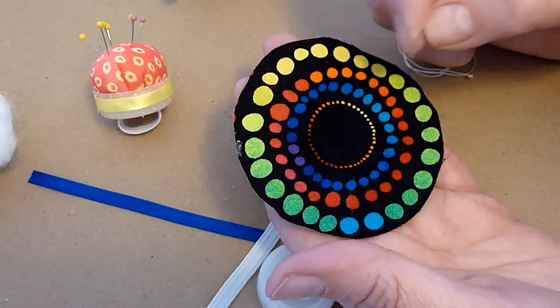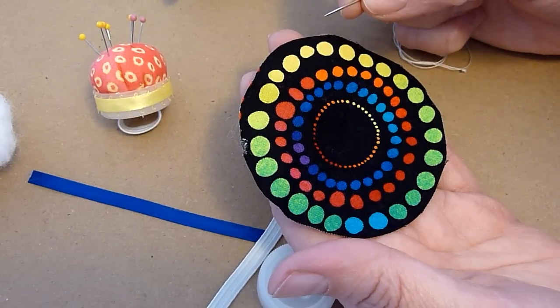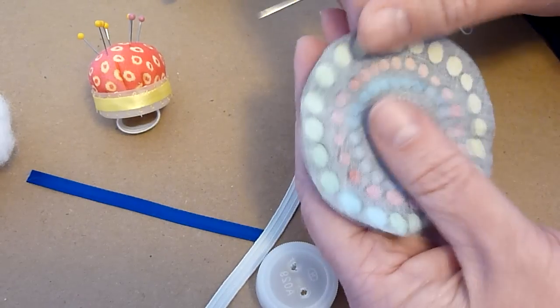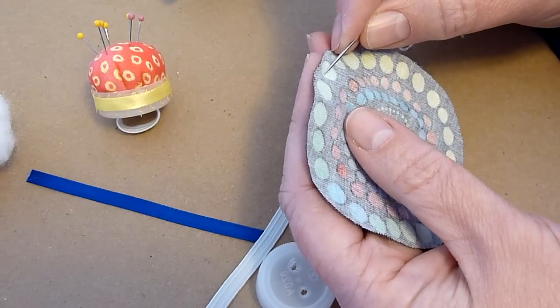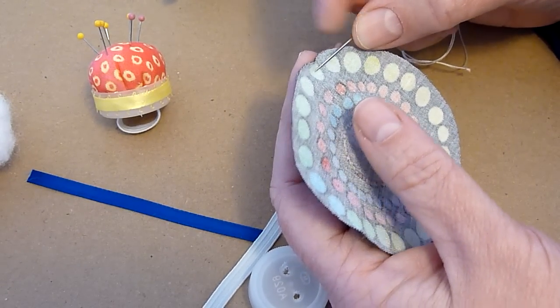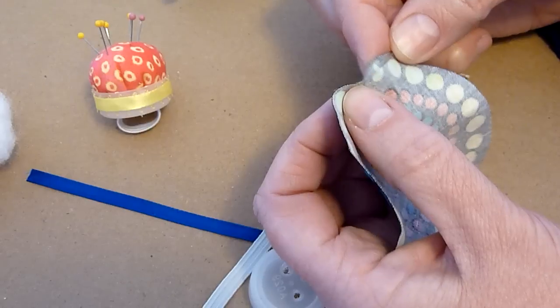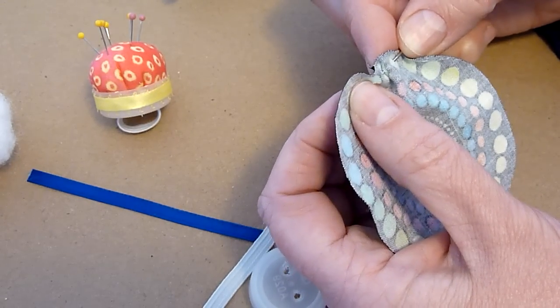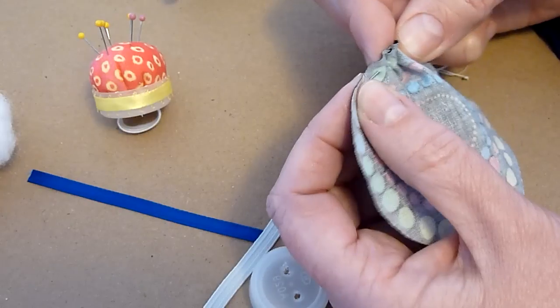The first step is to take our circle piece of fabric. We're going to gather the edges. I quadruple knotted my thread because I need a tight knot for this. I'm going to go about a quarter inch from the edge, and I'm just going to go back and forth all the way around, and then we're going to gather in just a moment.